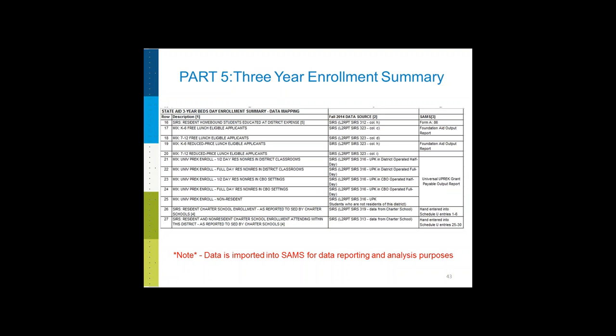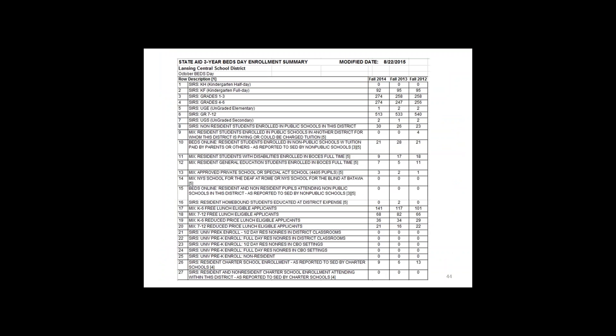Items 1 through 16 are listed on this first slide and items 16 through 27 on the next, showing the relationship to SAMS, Foundation Aid Output Reports, Universal Pre-K Grant Output Reports, or Schedule U. We created a crosswalk between data warehouse and school business so that when you talk to your data coordinator or whoever is overseeing this data reporting process, you can have a common language so each person understands where the other is coming from.